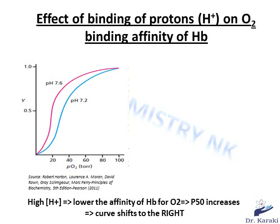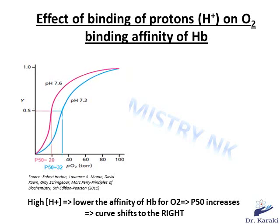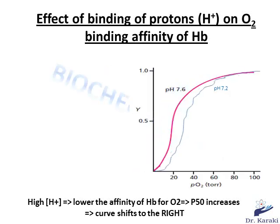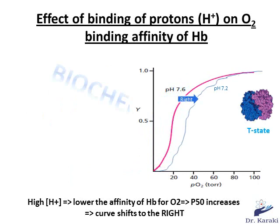Now let's see how proton binding to hemoglobin influences the oxygen saturation curve. In acidosis, when the pH is low due to a high concentration of H+, the affinity of hemoglobin for oxygen decreases. So the P50 will increase, because affinity and P50 are inversely proportional. This effectively causes a shift of the oxygen saturation curve of hemoglobin.